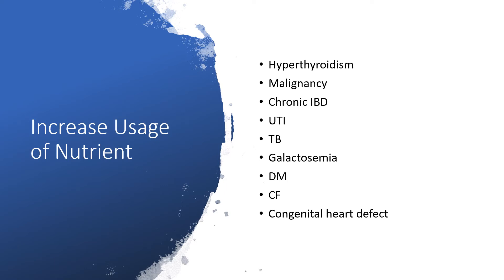Increased usage of nutrients is another cause — the child is well fed, but medical conditions cause the child to use nutrients faster than they can retain them for weight gain. Examples include hyperthyroidism (increased metabolic rate), malignancy, chronic inflammatory bowel disease, renal insufficiency, tuberculosis, galactosemia, diabetes mellitus, cystic fibrosis, and congenital heart defects.